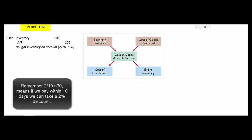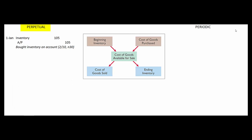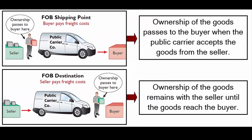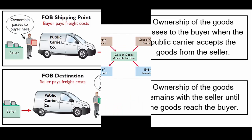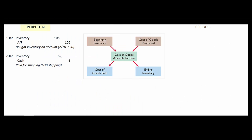So first let's look at the perpetual inventory system. We buy some inventory for $105. We debit inventory, credit accounts payable, and the terms are 2/10 net 30. Then if the terms of that shipment were FOB shipping point, that means we were responsible for the shipping costs and we include those as part of our inventory costs.